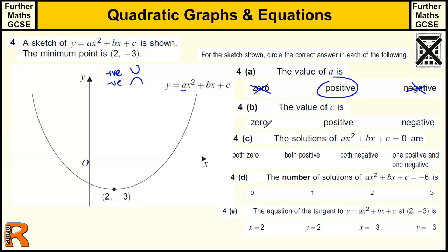The value of c is zero, positive, or negative. Now, with the value of c, if c was zero, then we wouldn't have the c part here. We could factorize out the x and you would get a zero value for the solution. So it would be coming down through zero. So we know it's not zero.